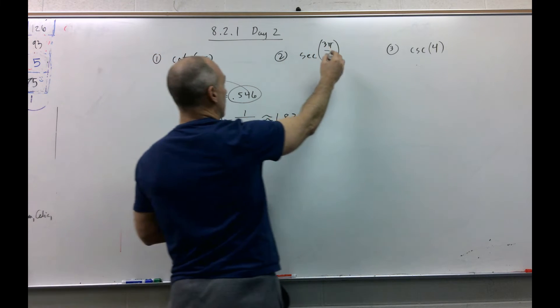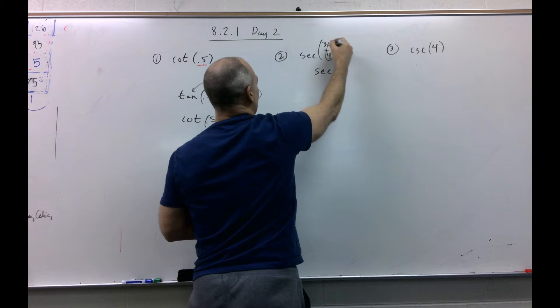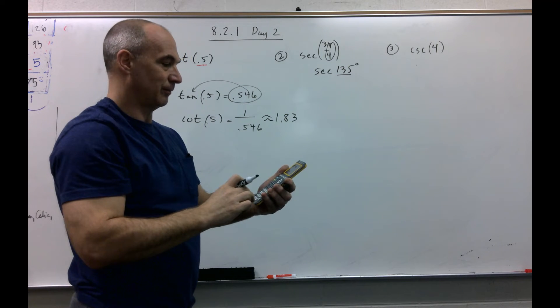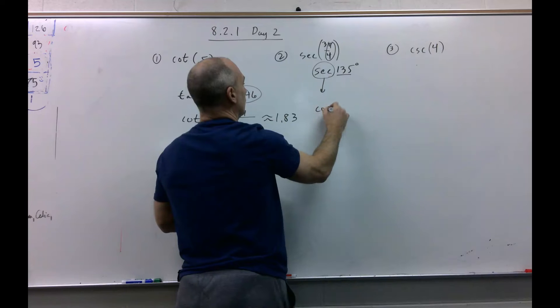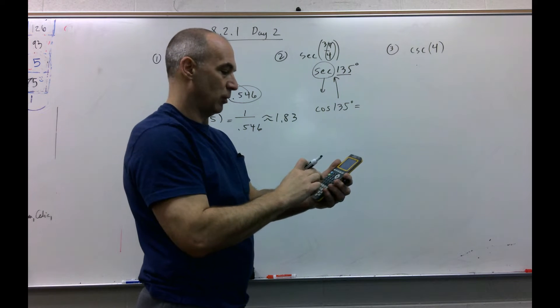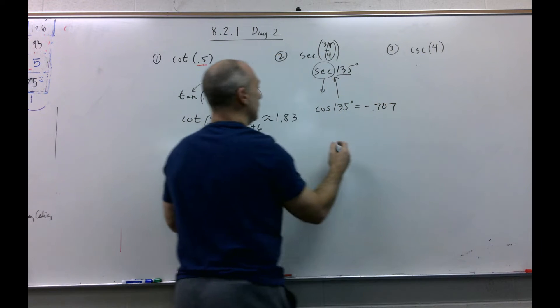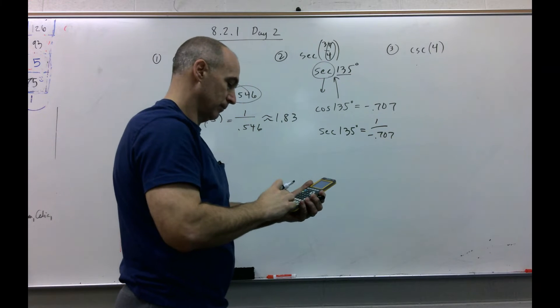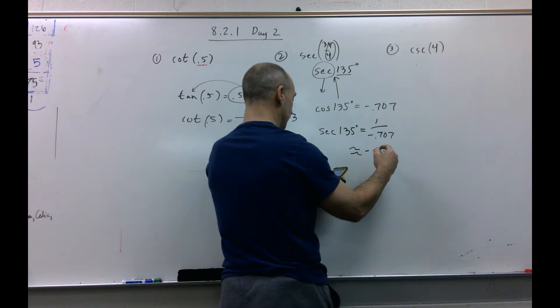All right, let's move on to secant. First of all, we could use radians, but I'm going to go ahead and say that's the same thing as secant 45 times 3, 135 degrees. But if I do that, I got to go to my calculator, go back to degrees. But what is secant the reciprocal of? Reciprocal of cosine. So if I find the cosine of 135 and flip it, it will tell me what secant is. Cosine of 135 is negative 0.707. So secant of 135 would have to be 1 over negative 0.707, which is approximately negative 1.41.